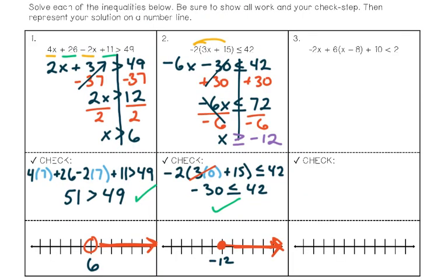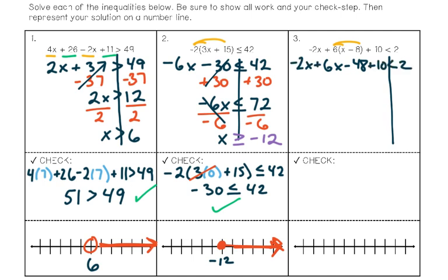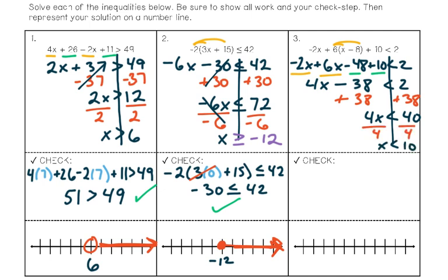Let's look at the last example together. The first thing I see is a number next to parentheses, so I distribute the 6 to each term inside. Then I bring everything else down and look for like terms. Negative 2x plus 6x makes 4x, and negative 48 plus 10 is negative 38. I then add 38 to both sides, then divide both sides by 4, giving me x is less than 10.